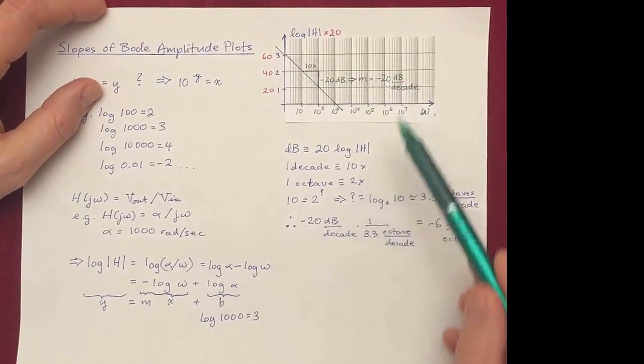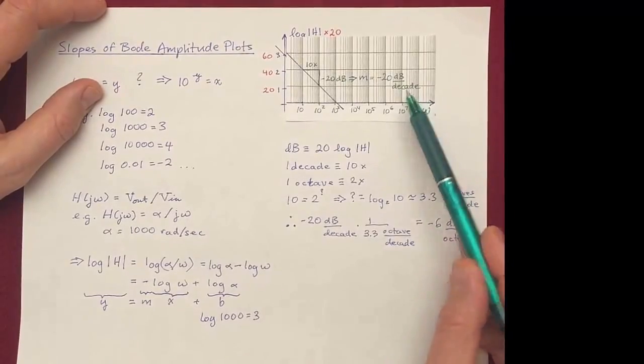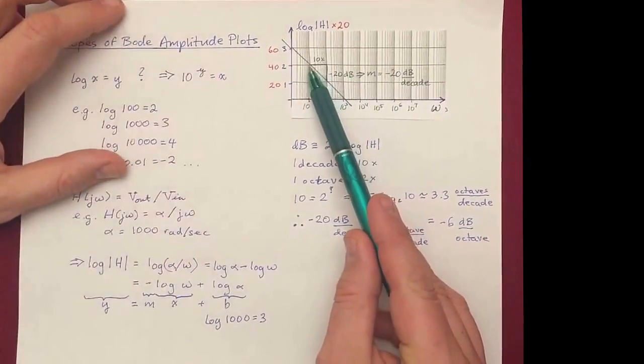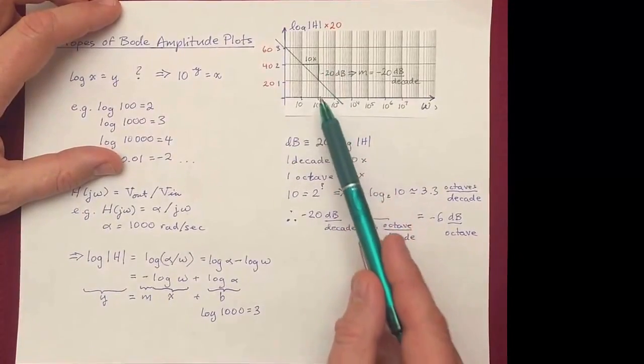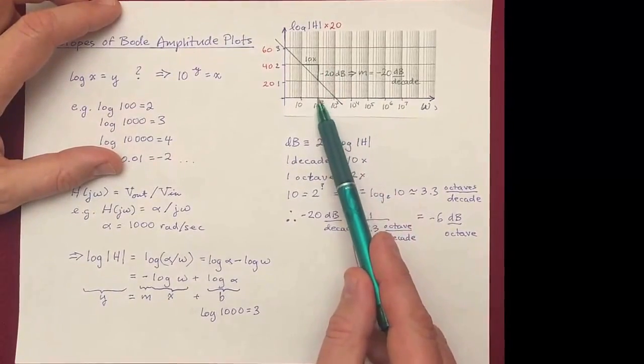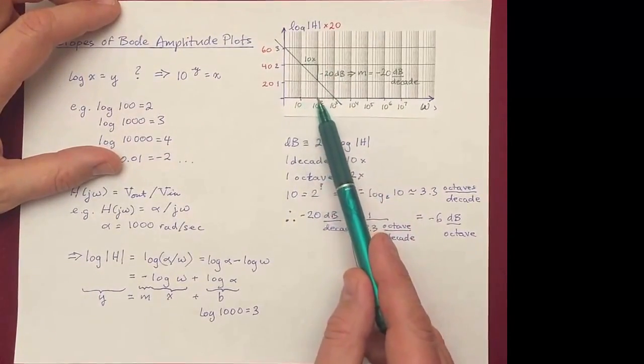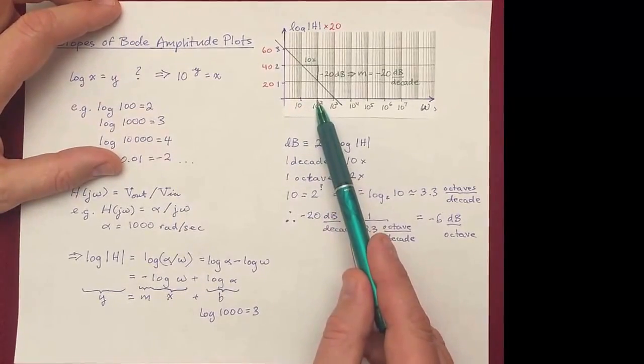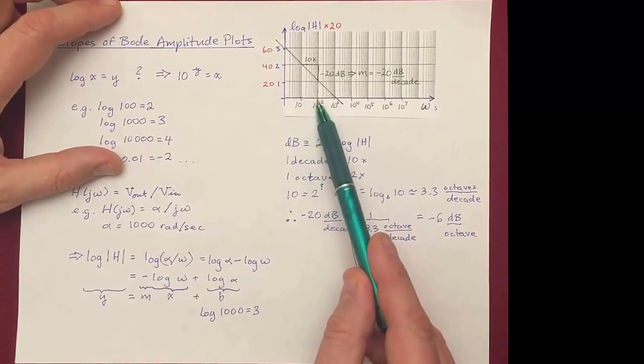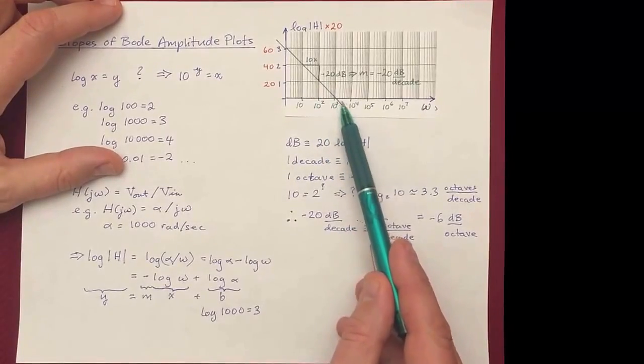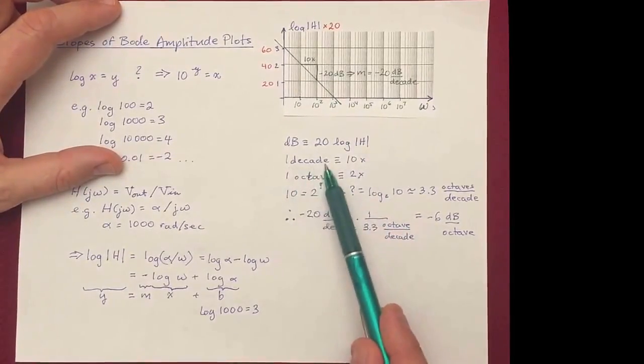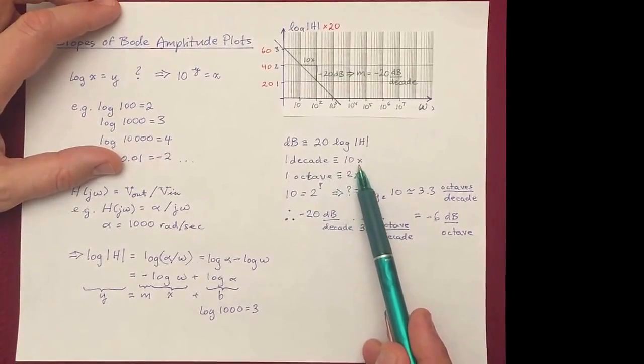Now, this word decade we use to represent a factor of 10. Why is it that this one unit here corresponds to a factor of 10? If you look at the bottom here, each one unit in the x-axis is like multiplying the previous value by 10. So we multiply by 10 to go to 100, multiply 10 to go to 1,000, and so forth. So each step here is a decade. A decade is defined to be multiplying it by 10.